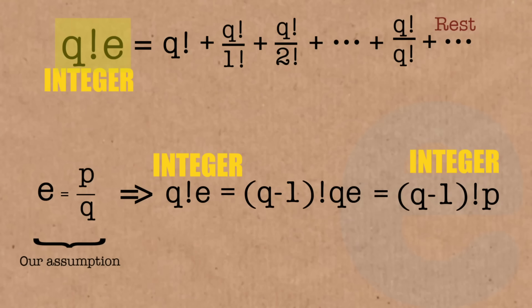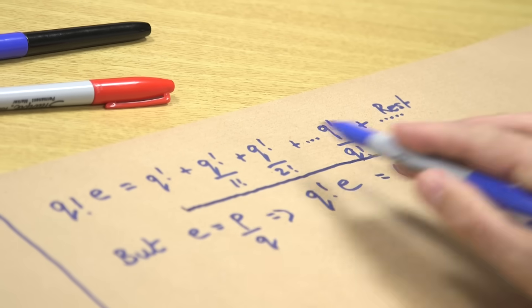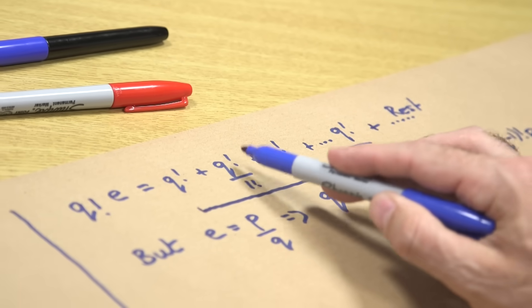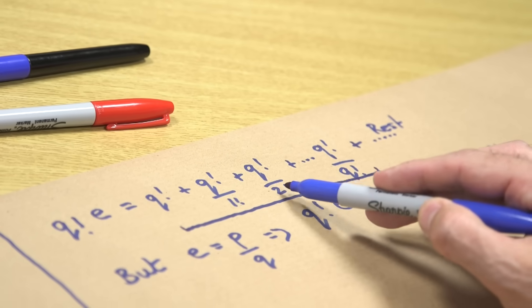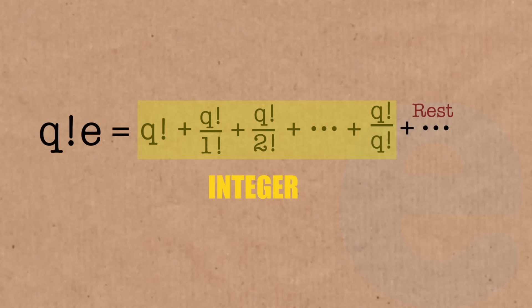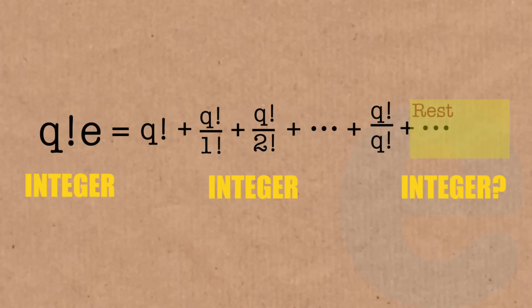Now let me look at the right-hand side. Hopefully you can be convinced that this part I've underlined is also an integer. Q factorial is just an integer; q factorial over 1 factorial is just an integer; q factorial over 2 factorial — the twos cancel — so this is also an integer. This is an integer, this is an integer. This then implies that the rest must also be an integer — I can't have an integer here and have this not being an integer. Otherwise, if this were a half, I'd have an integer equals an integer plus a half, and that's not right. So the rest must be an integer.